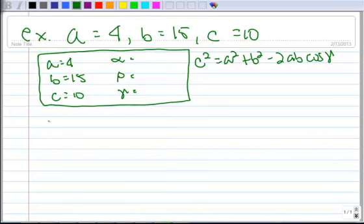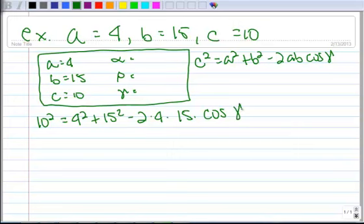You can solve for any of the angles. It doesn't make any difference. So we have 10 squared equals 4 squared plus 15 squared minus 2 times 4 times 15 times cosine of gamma.